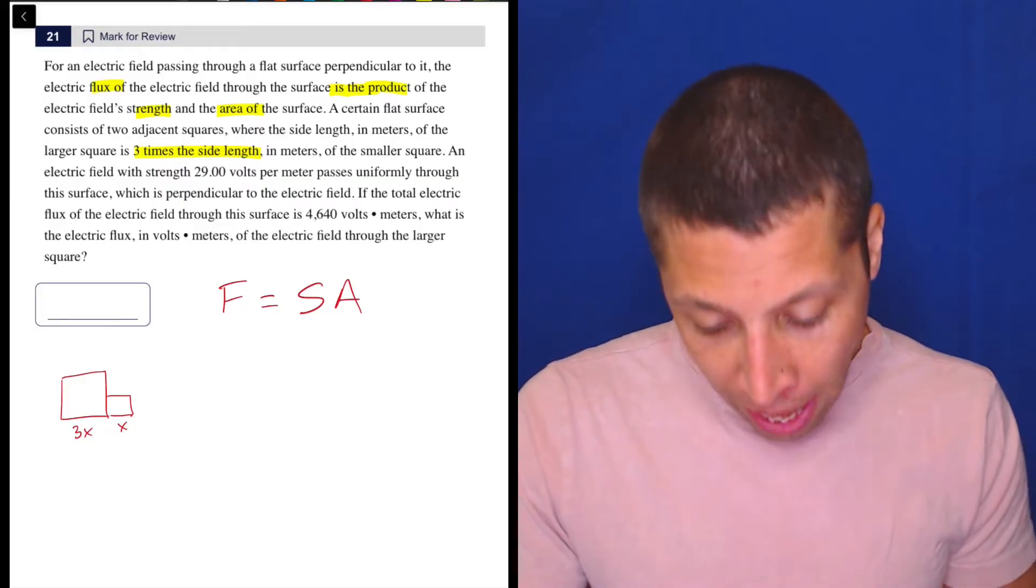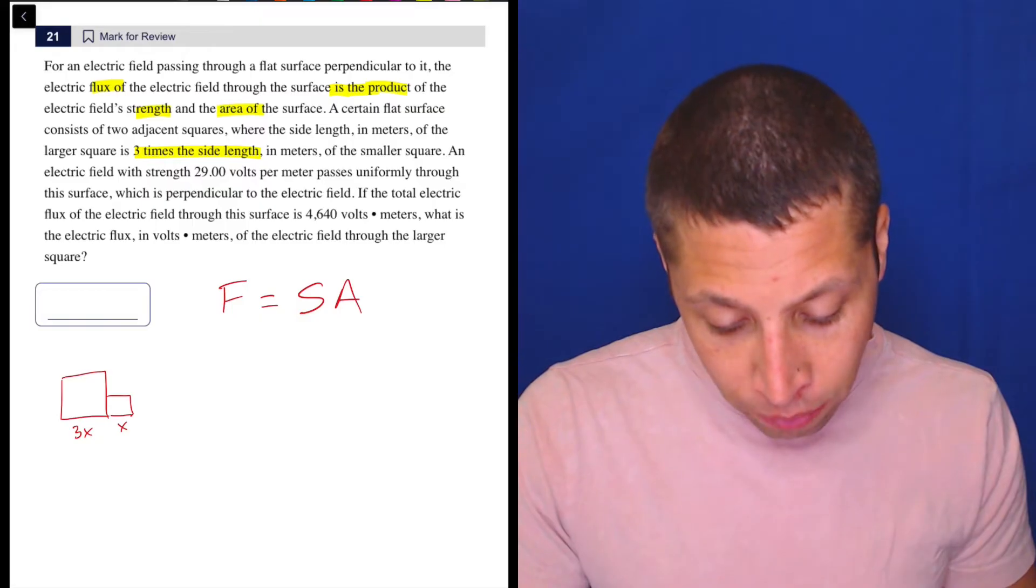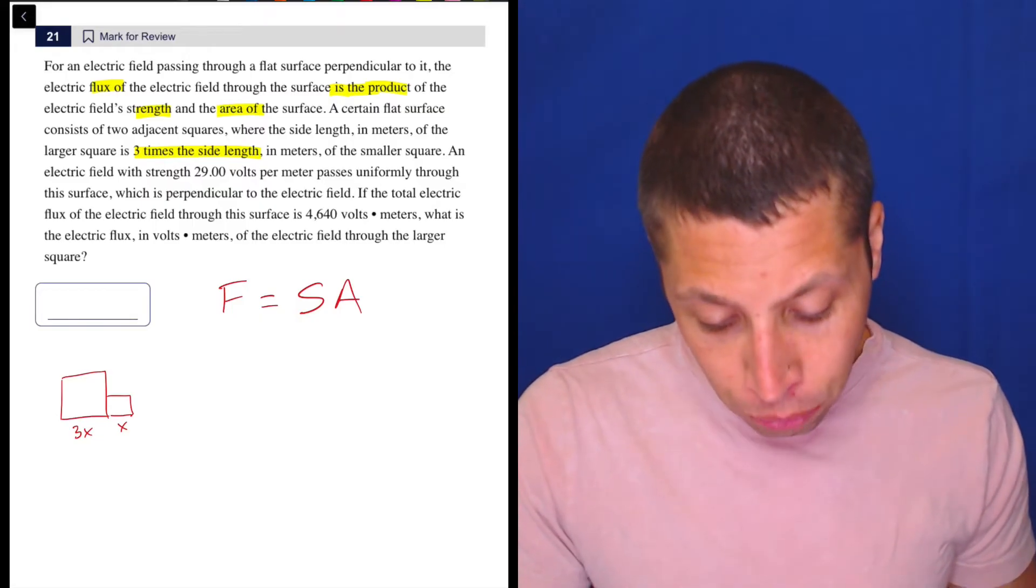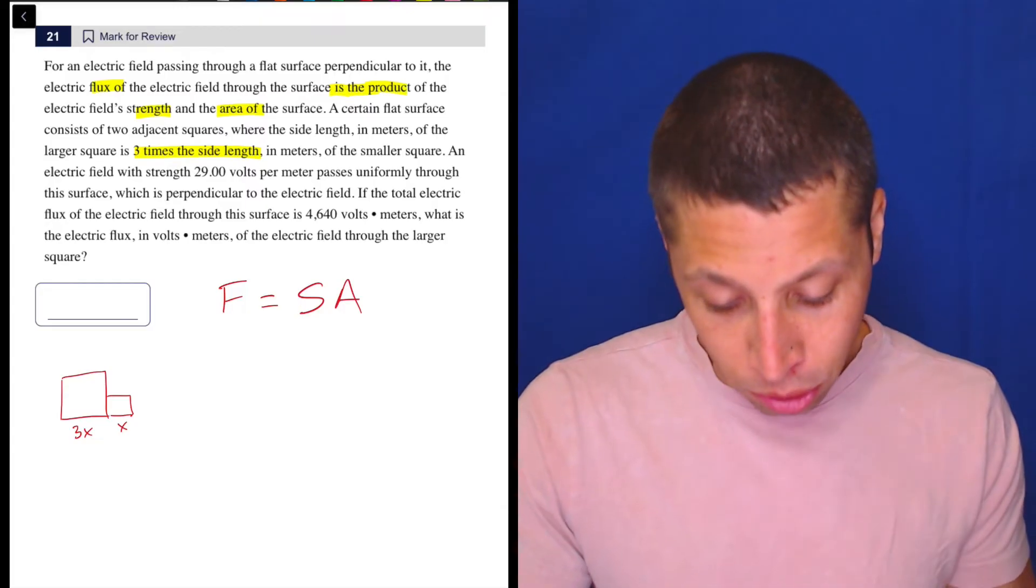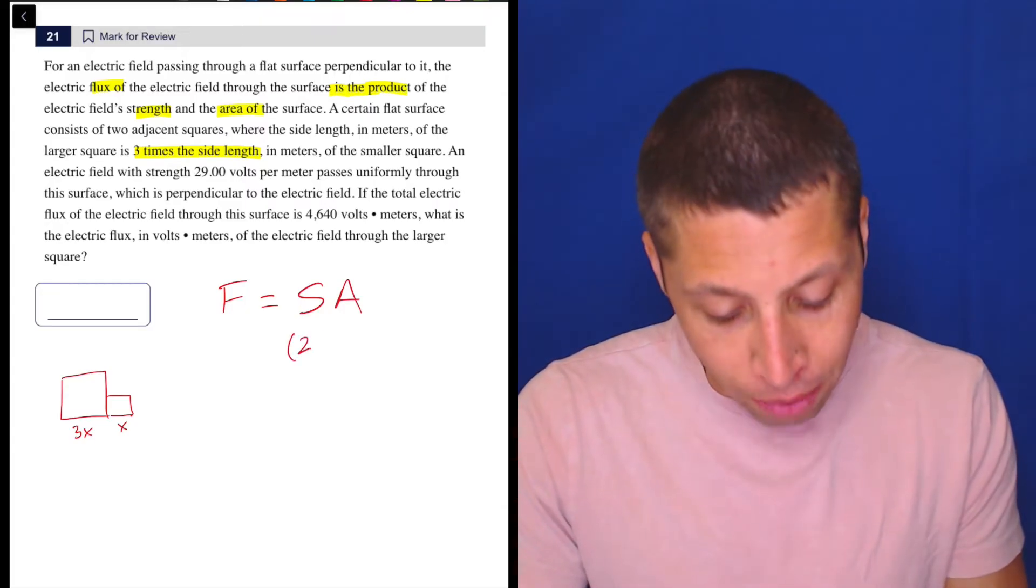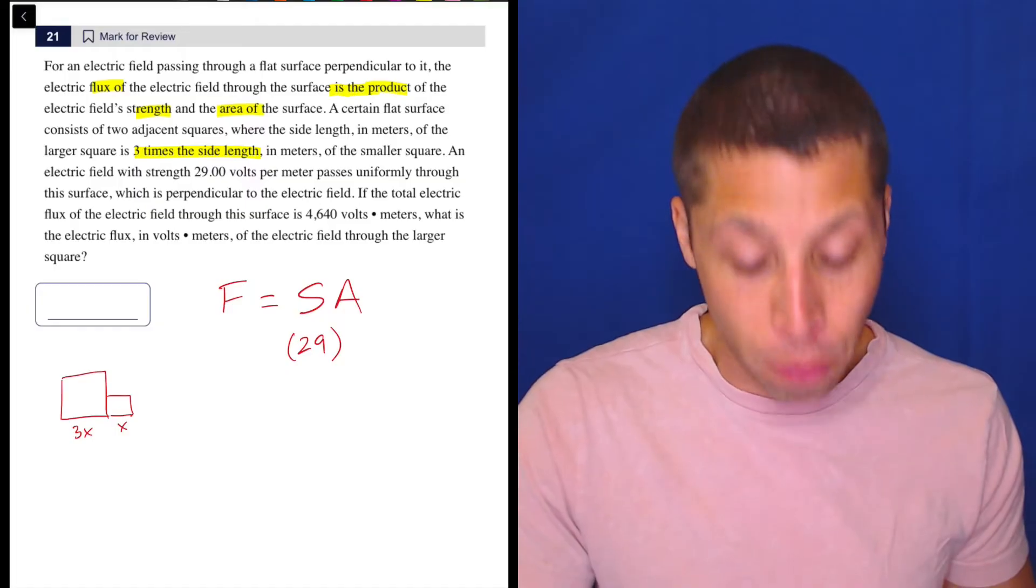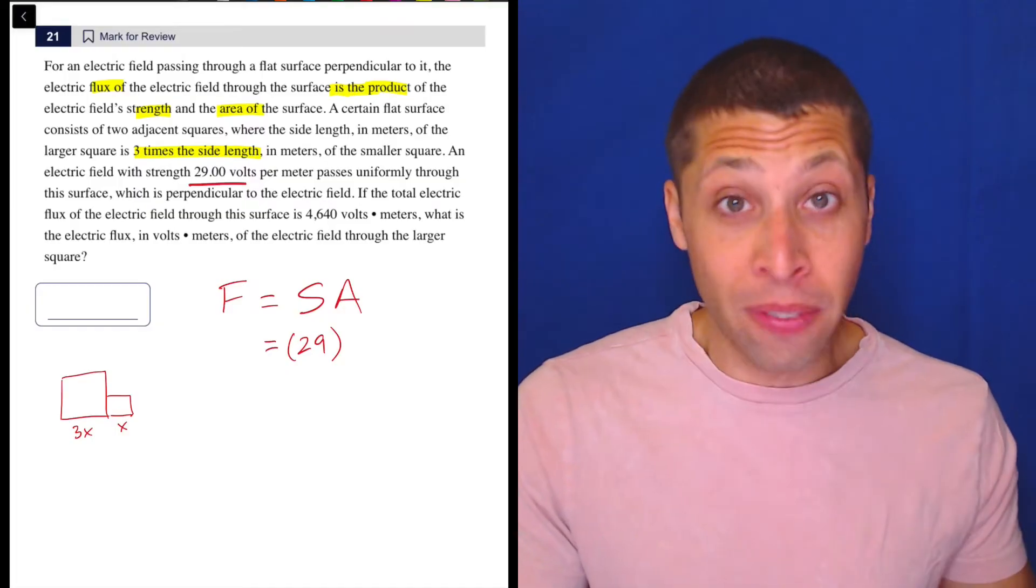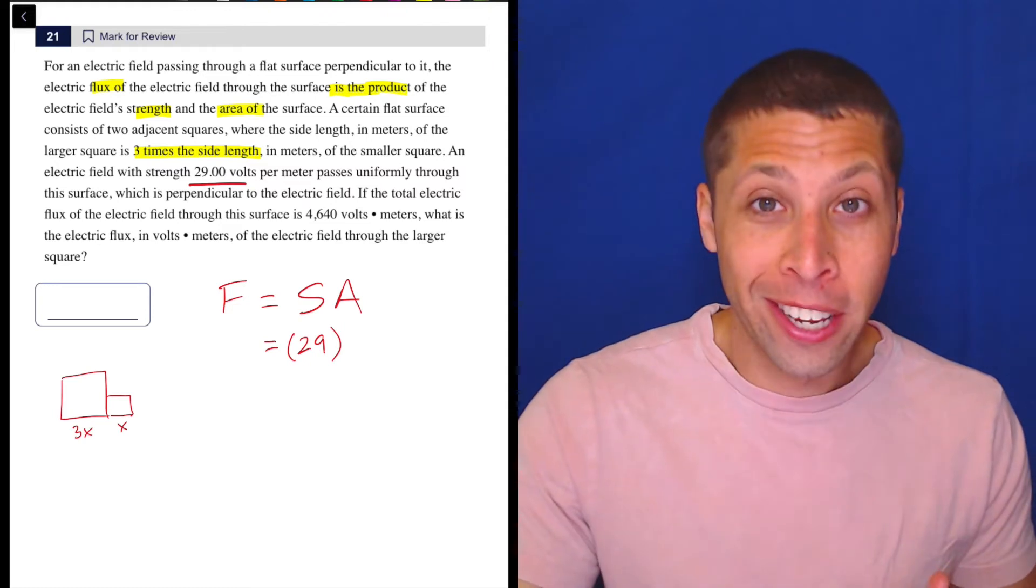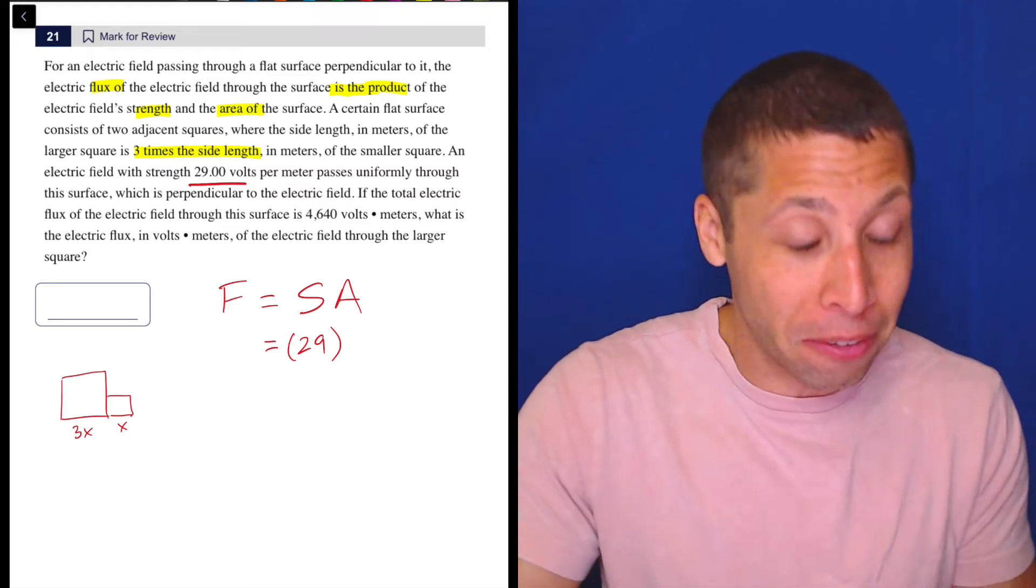Continuing, an electric field with strength 29 volts per meter passes uniformly through the surface, which is perpendicular to the electric field. So strength of 29 volts. Why don't we just put that right here? I'm probably going to want to put that into my formula. The strength is 29. So that's just a value. That's literally a long sentence telling me to probably plug in for S.